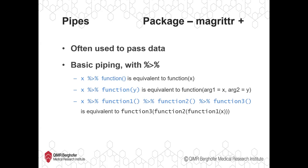The same applies if we have a function that requires two arguments. If you pipe x in, x will be given as the first argument. So x piped to function with y in the brackets is equivalent to calling function with x as the first argument and y as the second argument. Since a lot of functions are set up to have the data set or vector as the first object, you can just add other inputs inside the brackets without needing a comma before y — R will understand.